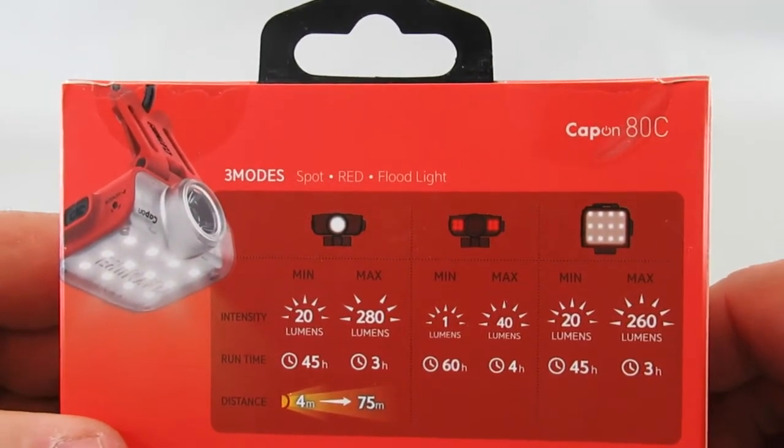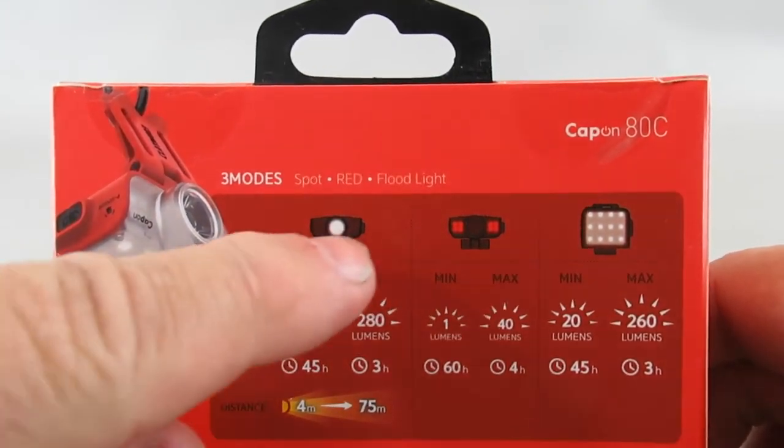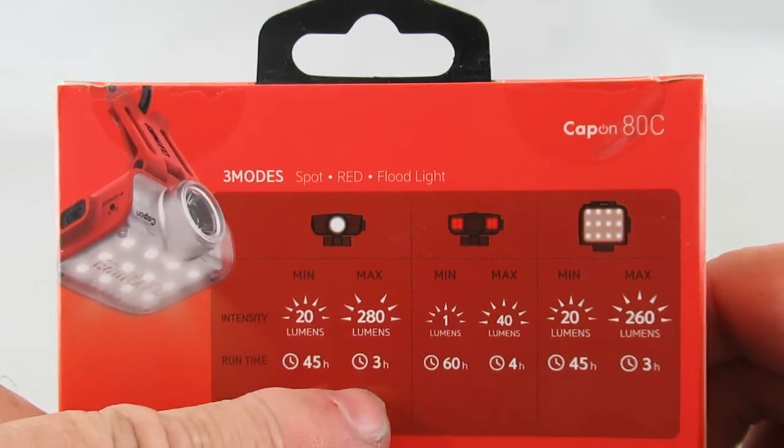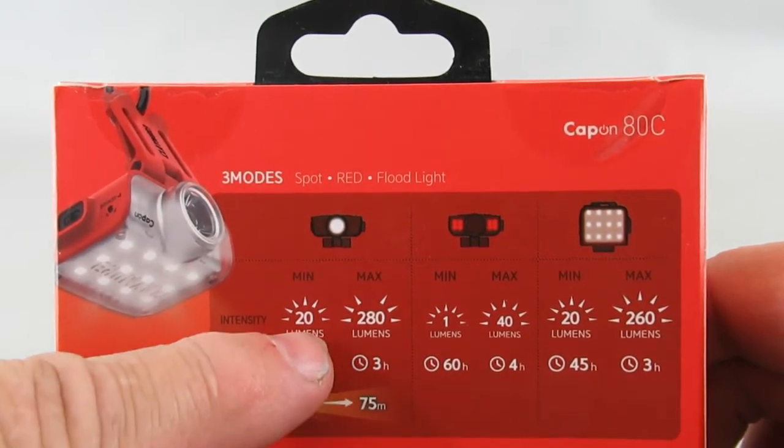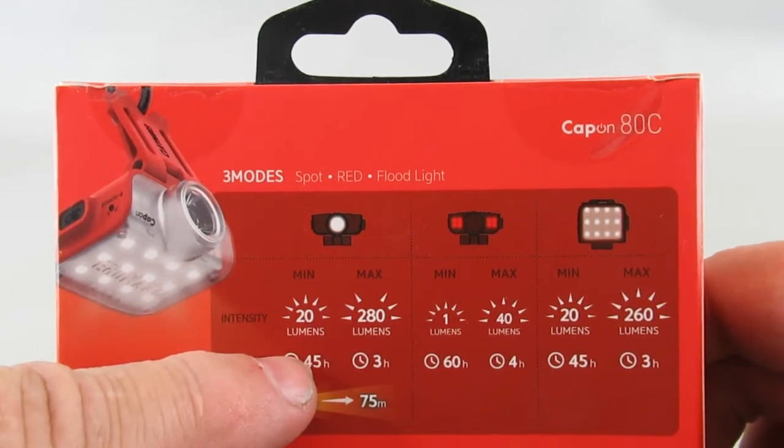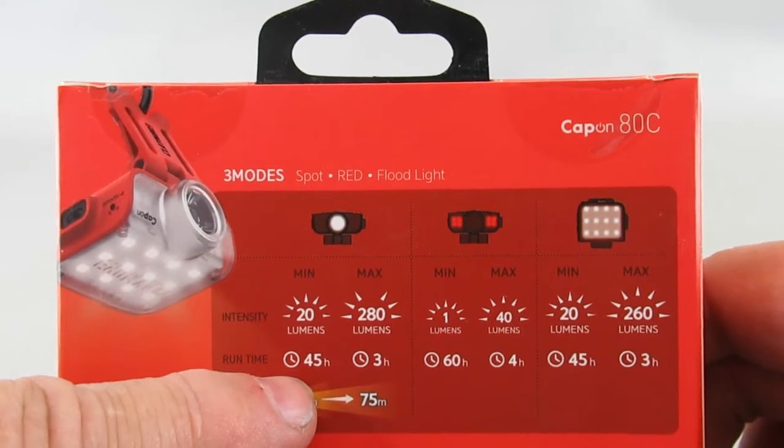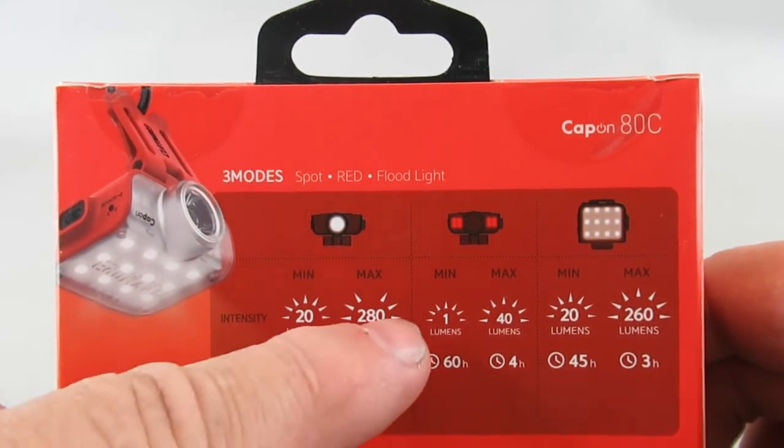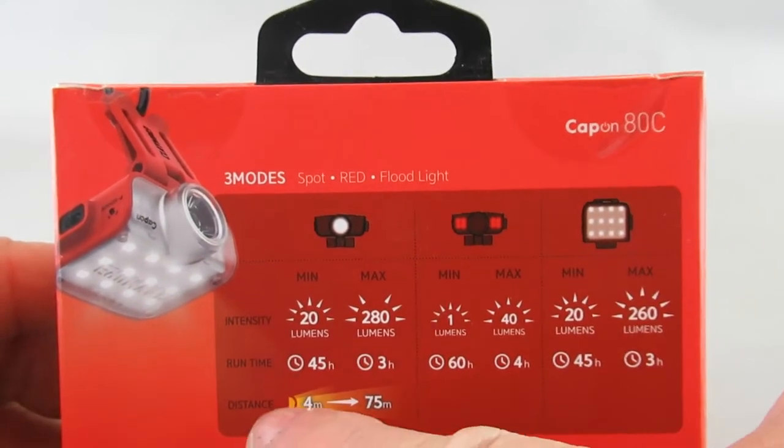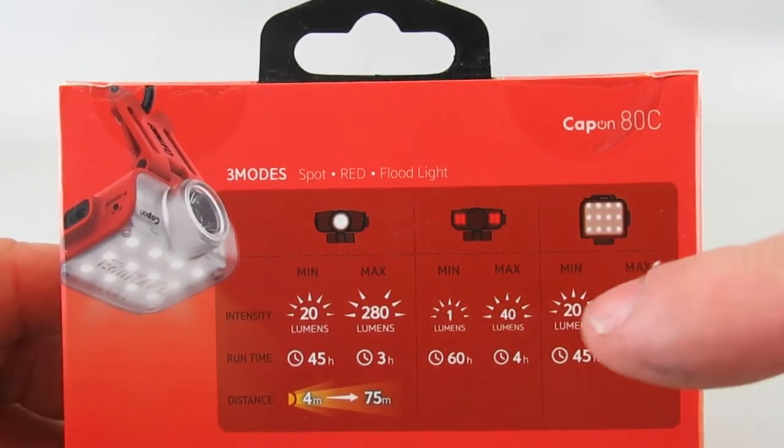The main white spotlight at maximum intensity puts out 280 lumens and runs three hours at that level. You can reduce the intensity with multiple settings and get 45 hours runtime. It has a spotlight range out to 75 meters at highest intensity.